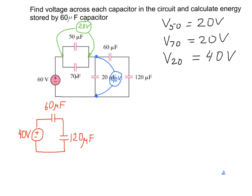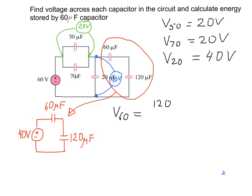Taking these two capacitors — 60 and 120 microfarads — connected in series with a total voltage of 40 volts, we apply the capacitive voltage divider rule. The voltage across the 60 microfarad capacitor is (120 / (120 + 60)) × 40 volts, and the answer is 26.7 volts.